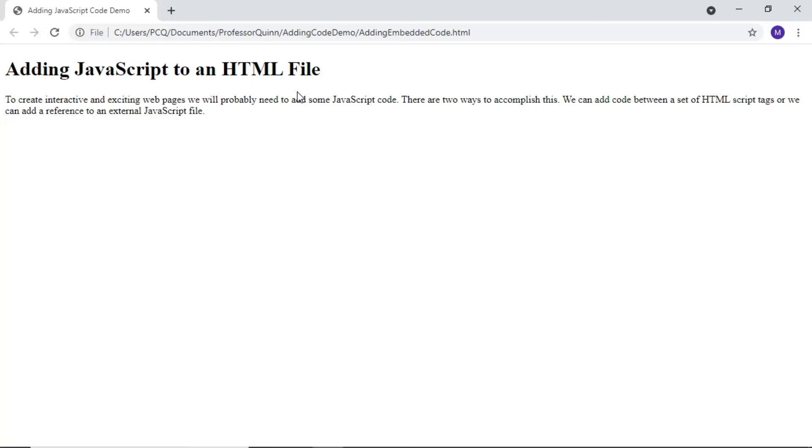Again, we do not see the alert message, so we know there is a problem. We can open the console, and this time we'll use Control, Shift, and J.